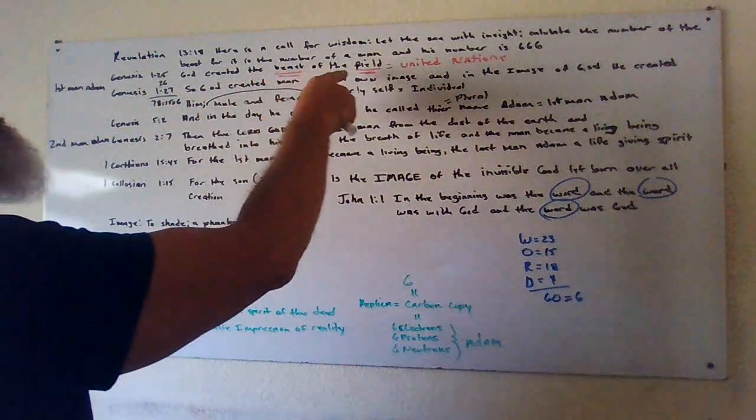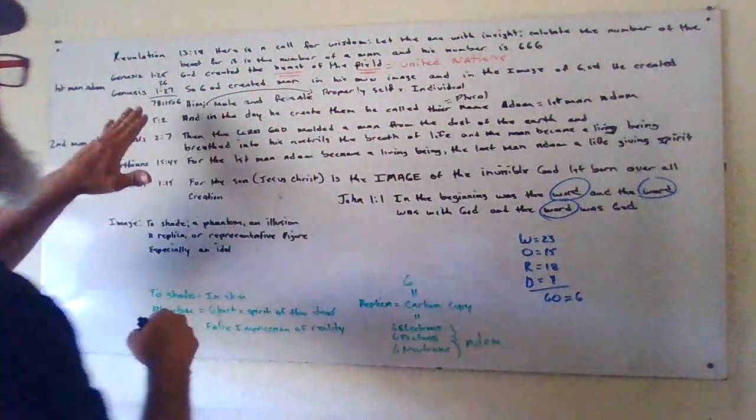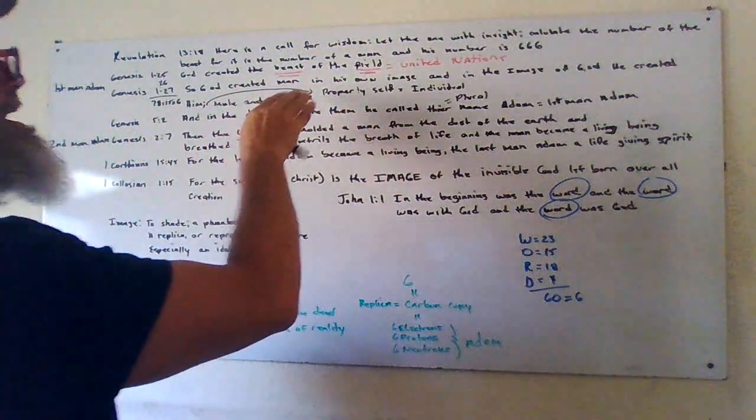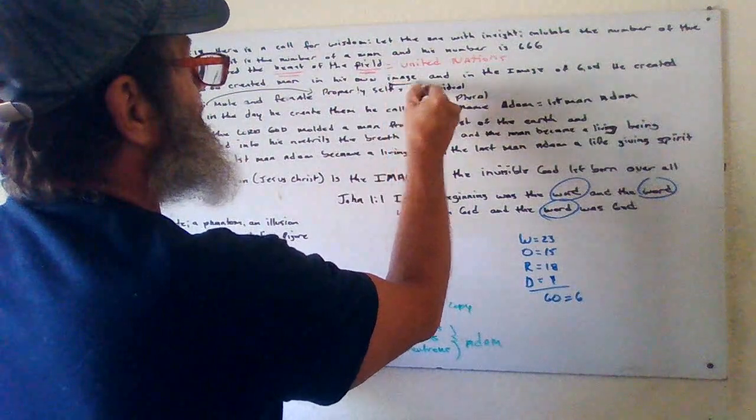So God creates the beast of the field, each according to their kind. The beast of the field are the United Nations, and then God creates another man in his own image. The word image is the key here in what we're learning.